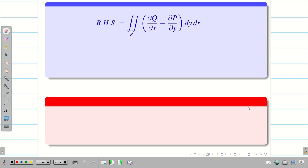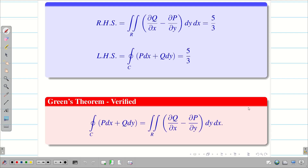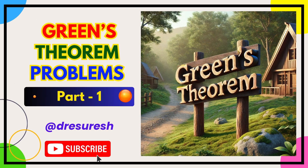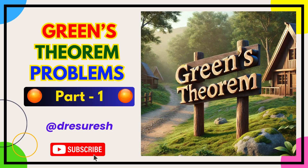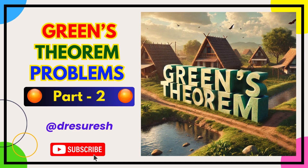Now we add all three values. LHS equals the integral along OA plus AB plus BO, which is 1 plus 8/3 minus 2. Taking LCM: (3 minus 6 plus 8) over 3 equals 5/3. Therefore LHS equals 5/3. We found RHS equals 5/3 and LHS equals 5/3. Hence Green's theorem is verified. Thanks for watching. Hope you found this video helpful. Subscribe to our channel and share with your friends.